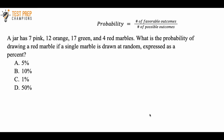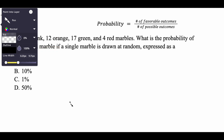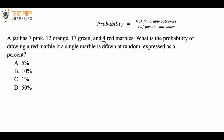Probability equals the number of favorable outcomes divided by the number of possible outcomes. So here it's asking: what is the probability of drawing a red marble? The number of favorable outcomes is 4. And then for the number of possible outcomes, what I do is I add up 7,